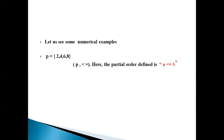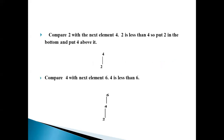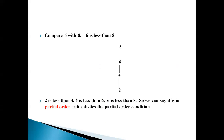Let us see some numerical examples. Given the set P equal to {2, 4, 6, 8}. The partial order defined is A less than or equal to B. Compare 2 with 4: 2 is less than 4, so put 2 at the bottom and 4 above it. Compare 4 with 6: 4 is less than 6. Compare 6 with 8: 6 is less than 8. So 2 < 4 < 6 < 8. We can say it is in partial order as it satisfies the partial order condition.